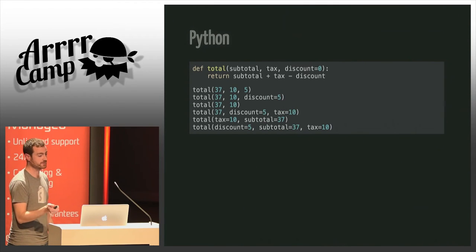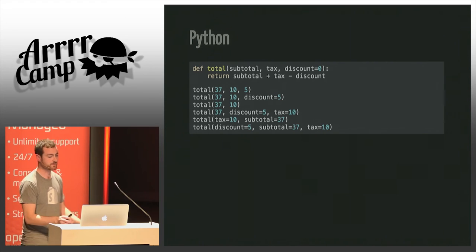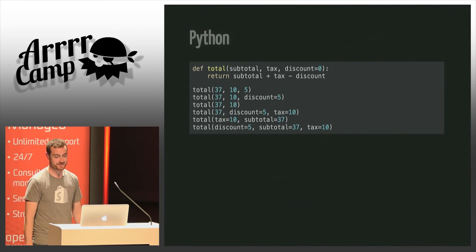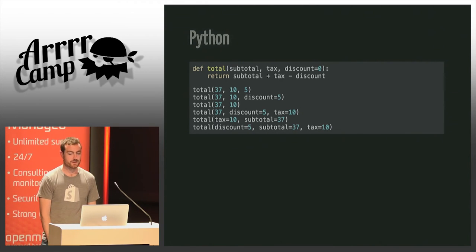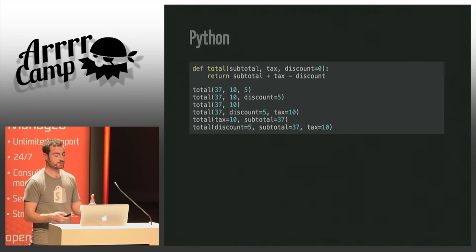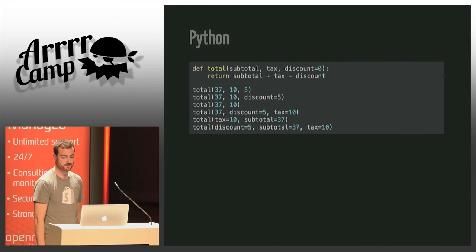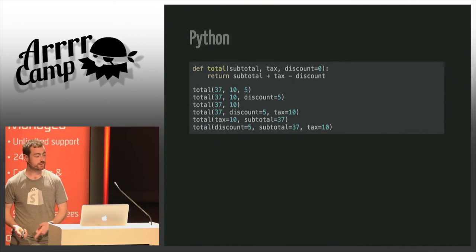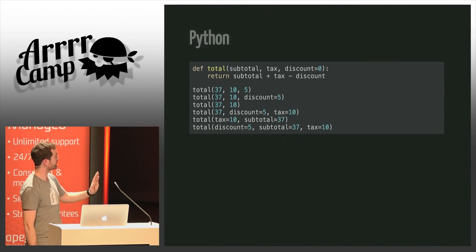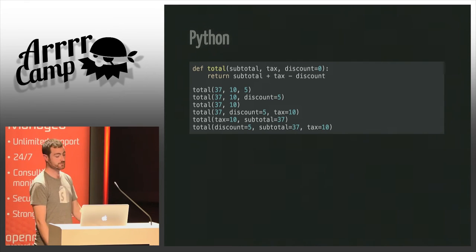Let's compare quickly to another language that has a different implementation of keyword arguments. As you can see in Python, any parameter can be named and it doesn't have to have a special definition to be nameable. The parameters have a name but also a position, and you're allowed to pass any number of parameters by position until you want to switch to passing by name.